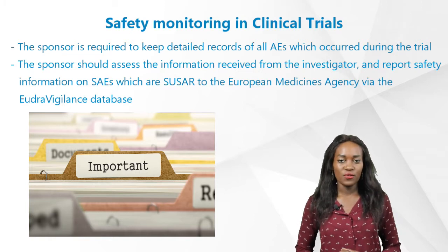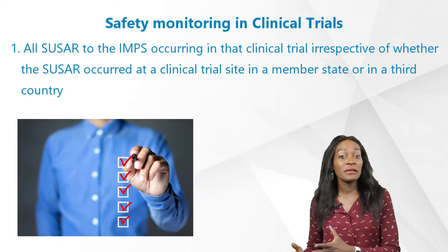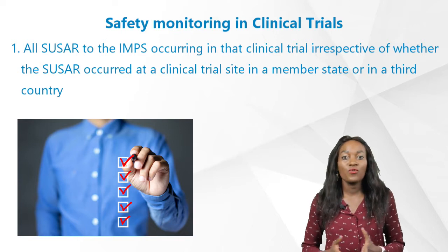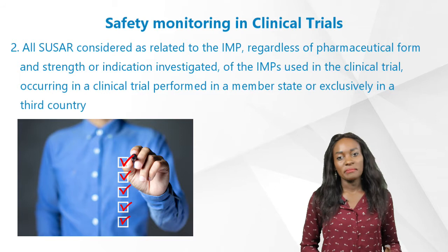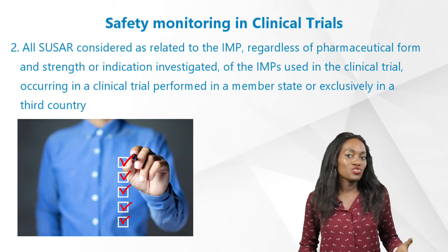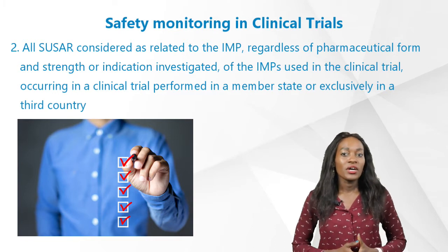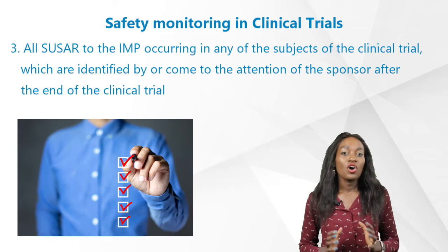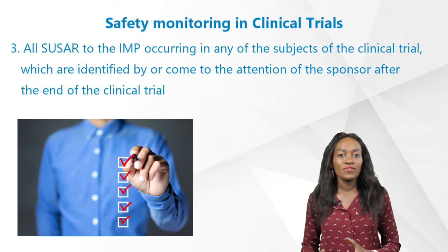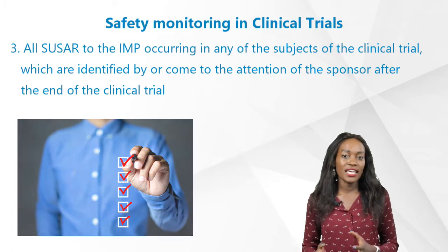These should also be reported as follows. First, all suspected unexpected serious adverse reactions (SUSARs) to the IMPs occurring in that clinical trial, regardless of whether the SUSAR occurred at a clinical trial site in a member state or in a third country. Secondly, all SUSARs considered as related to the IMP, regardless of the pharmaceutical form, strength, or indication investigated, occurring in a member state or exclusively in a third country. Third, all SUSARs to the IMP occurring in any of the subjects of the clinical trial which are identified by or come to the attention of the sponsor after the end of the clinical trial.